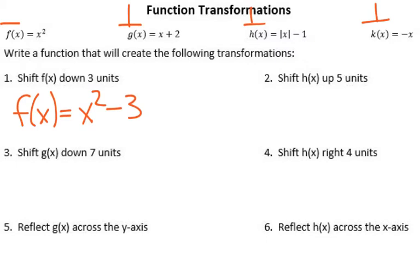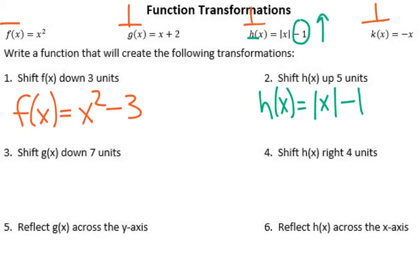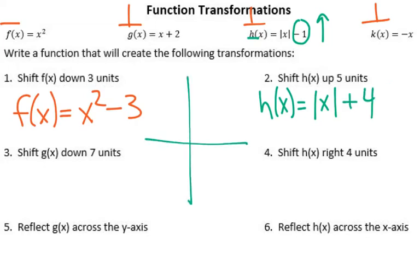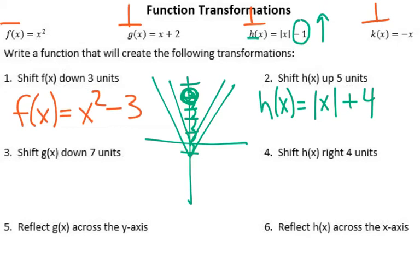Number two: shift h of x up five units. So here's h of x — it equals absolute value of x. Now it's already been shifted down one unit. So in order to get up five, it would be minus one plus five, but we can simplify that to just positive four. Because thinking about the graph, it started one unit down, so moving up five is actually only moving four from that parent graph.